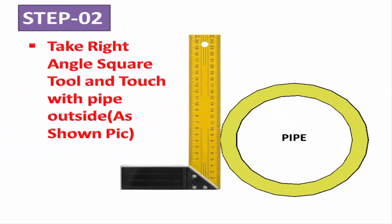Step 2: Take a right angle square tool and touch it to the outside of the pipe, as shown in the picture.